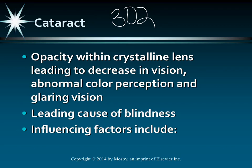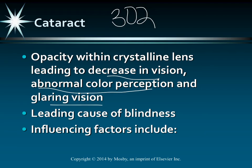Cataracts is just an opacity over the lens. It leads to a decrease in vision, abnormal color perception, and glaring vision. In the United States, it's a huge issue — many Americans have it by age 40, and by age 80 more than 50% have cataracts. It's the leading cause of blindness worldwide and a major cause of vision loss in the United States, costing about $6.8 billion a year. It is the most common surgical procedure in the United States.